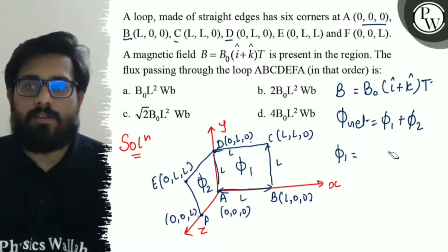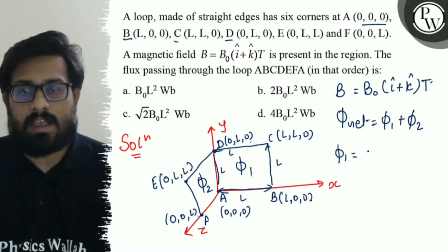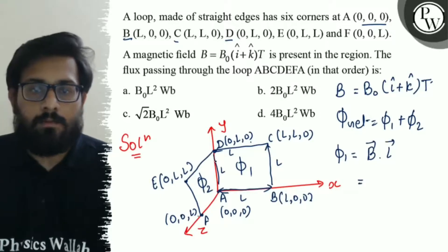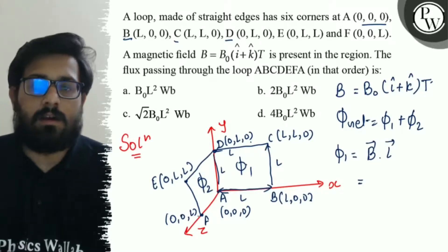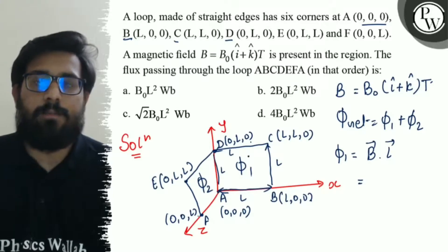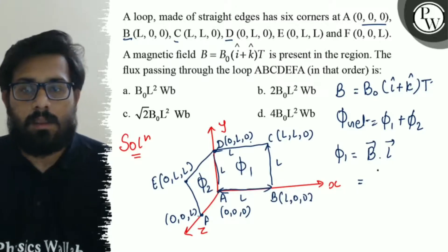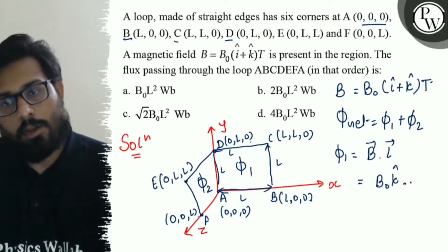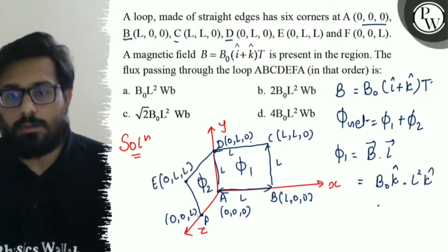So, we have a value of magnetic flux as B dot A. So, for this, which is in the X, Y plane, the value of B comes out to be nothing but B dot K cap dot L square K cap. So, you have got a value of B0 L square is the value of phi 1.